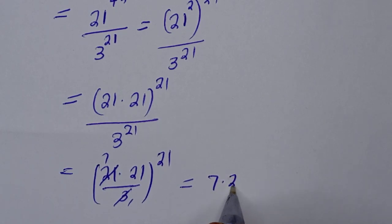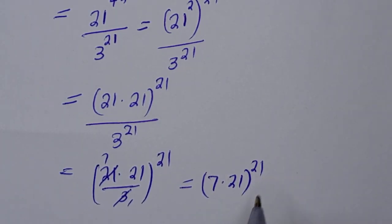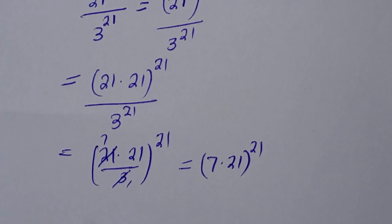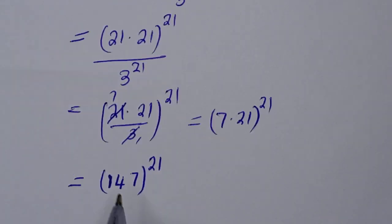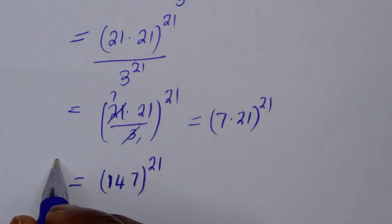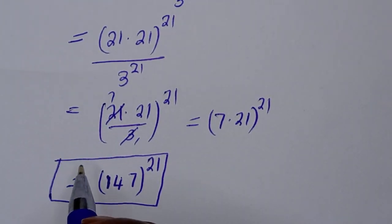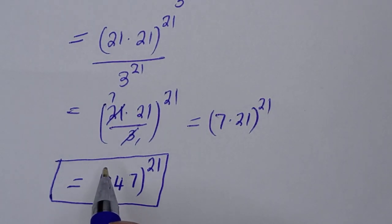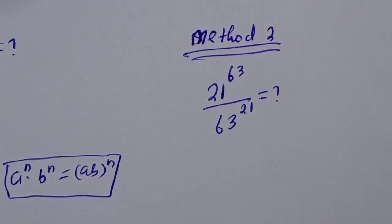This is equal to 7 times 21, that is 147, to the power of 21 — and this is the final answer. We can also solve this using another method, so let's solve it a second way.